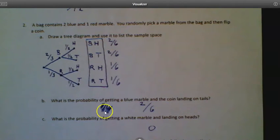Probability of getting a white marble. Well, there is no white marble, so that's really simple. That would have to be zero.